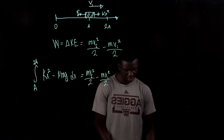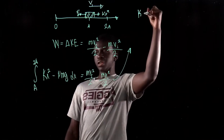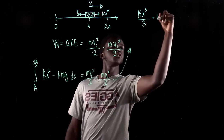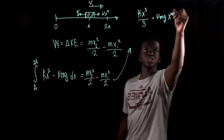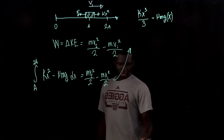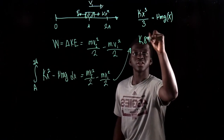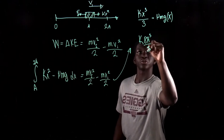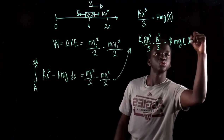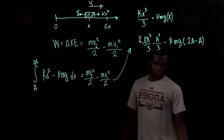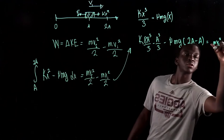Taking the integral gives kx³/3 minus μmgx. Now we plug in 2a and a and subtract: k(2a)³/3 minus k(a³/3), which gives k(8a³)/3 minus k(a³)/3, minus μmg(2a minus a). That whole expression is equal to mv1²/2.